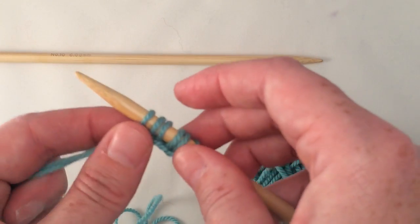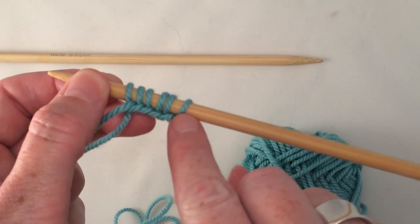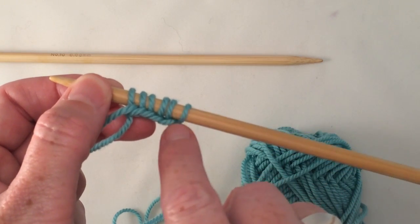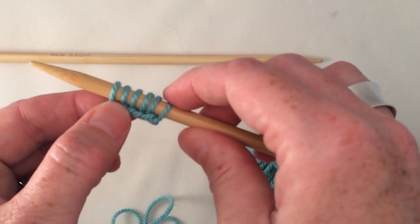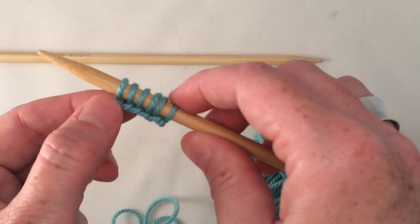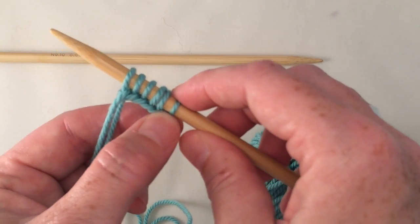And as you can see here's the stitches we've cast on. This is the starting loop, the starting slipknot. And then we have one, two, three, four, five. So we have six stitches total. You will count that slipknot.